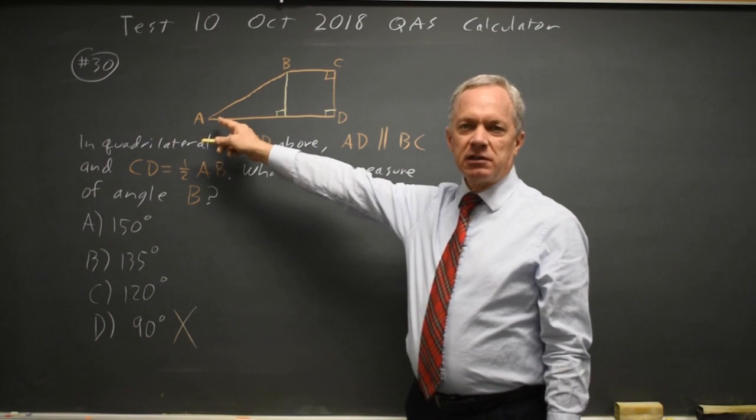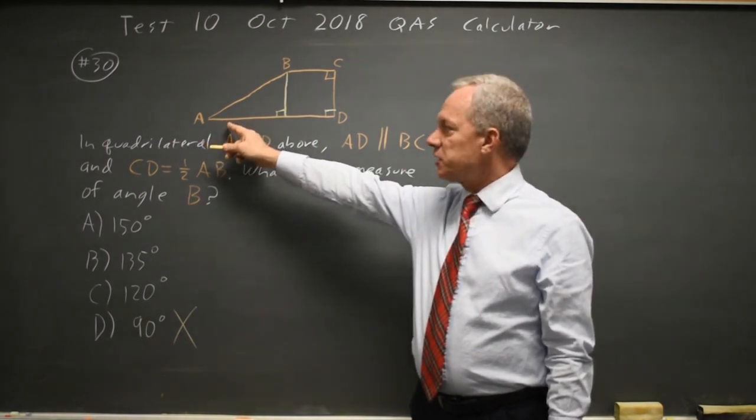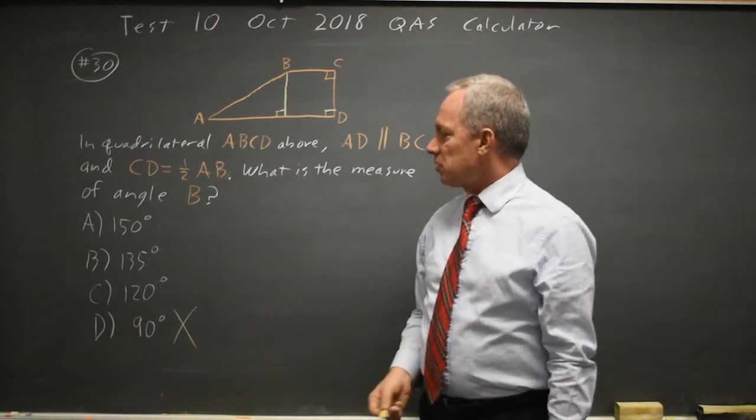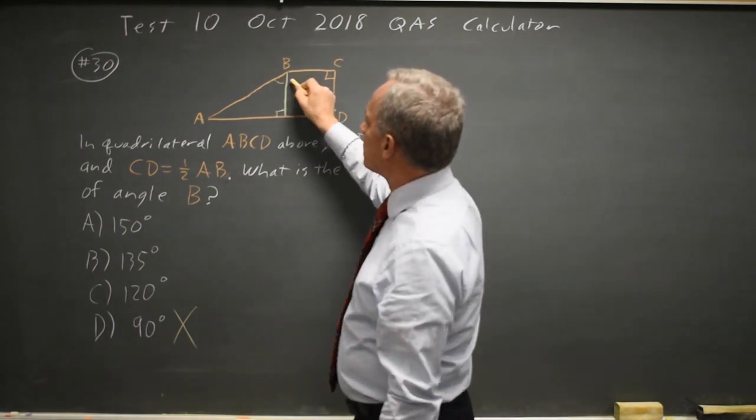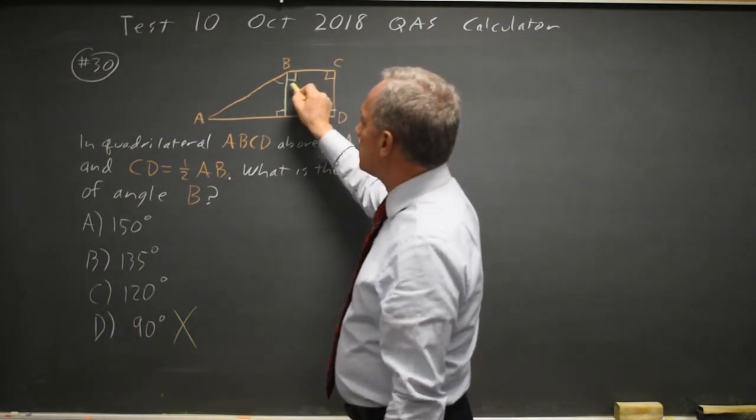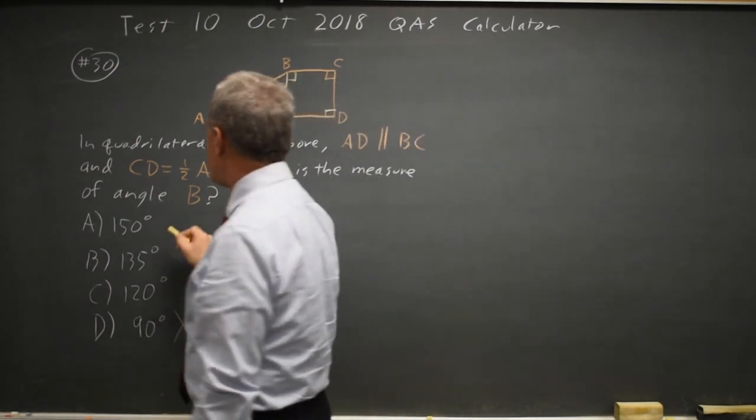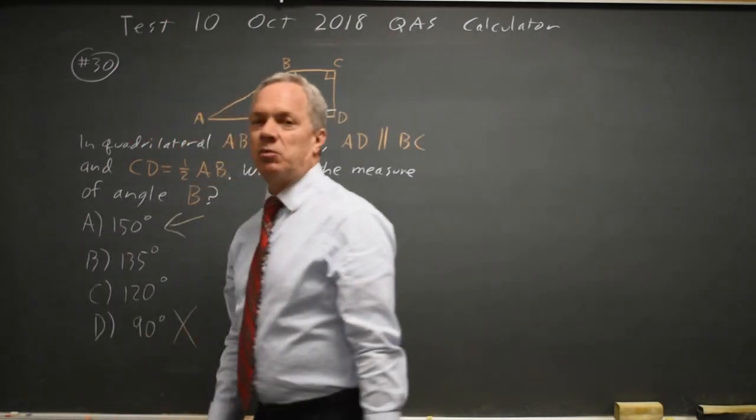Angle A is clearly smaller than 45 degrees in this picture, so angle B is larger than 45, or this portion is greater than 45, where this is a right angle. So angle B is greater than 135. It can only be 150.